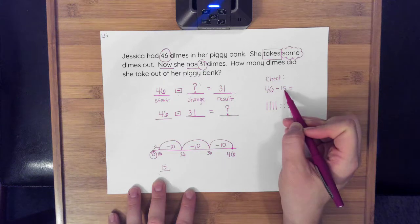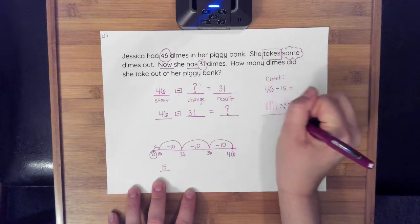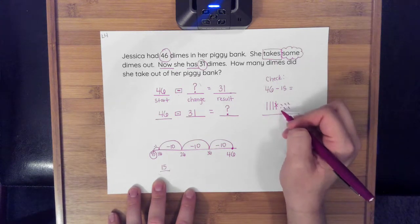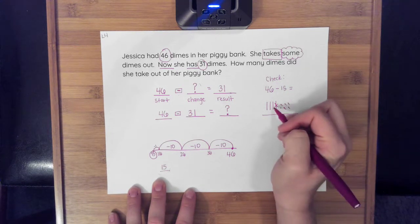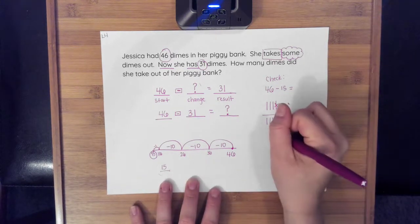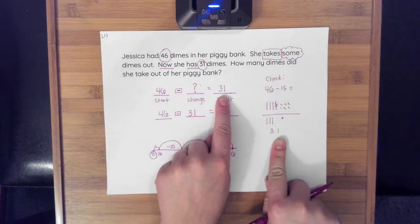I'm going to take away 15. So I take away five ones: one, two, three, four, five. And then if I take away one ten, I see that I'm left with three tens. So in my check, my number is 31. And that's what I wanted my result to be. My original result said that she had 31 dimes left. So my check of 46 minus 15 showed me that when I did 46 minus 31, getting that 15 was correct.